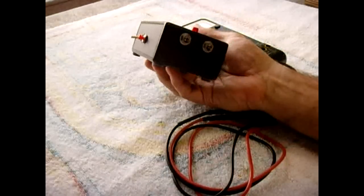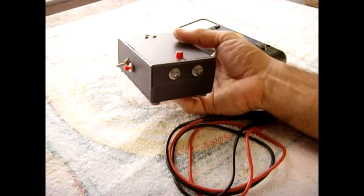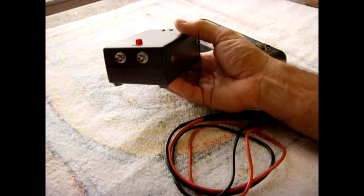When I turn on the switch on this side of the unit here, in about four to five minutes the Joule Thief will charge up the capacitors to approximately 500 volts DC.